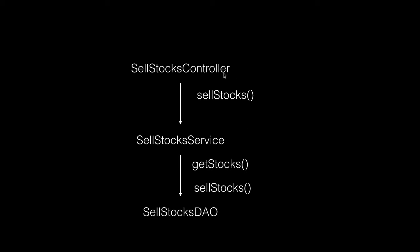So we have a controller class in the UI layer, a services class in the business logic layer, and then a DAO class in the data access layer which does all the database work. The transaction can be started in the controller, in the service layer, or in the DAO layer. When these classes call into each other, the one calling is the client and the one responding back is the provider of that service.